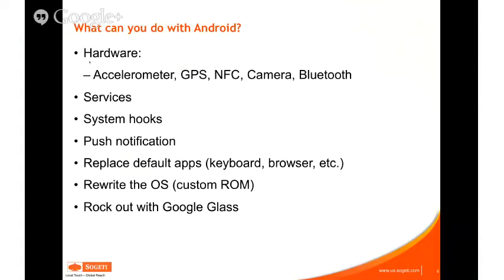Android is very pervasive and customizable. You can run it on a TV, a tablet — they just came out with a 17-inch tablet — all the way down to a tiny 2.3-inch smartphone. Hardware features include the accelerometer, GPS, near-field communication (NFC) which is Android-only, camera, and Bluetooth. Android does all that plus a few extra things like NFC that no other platform has.